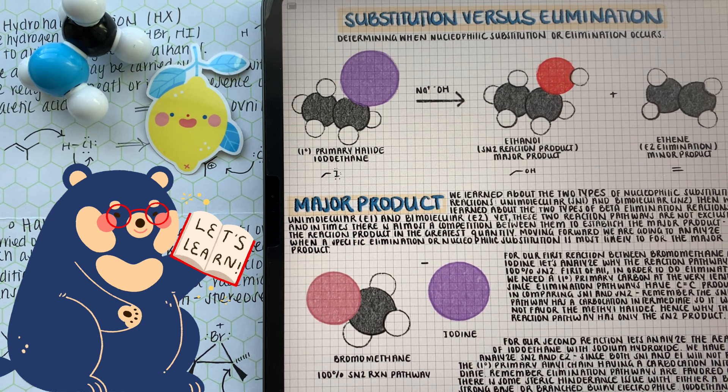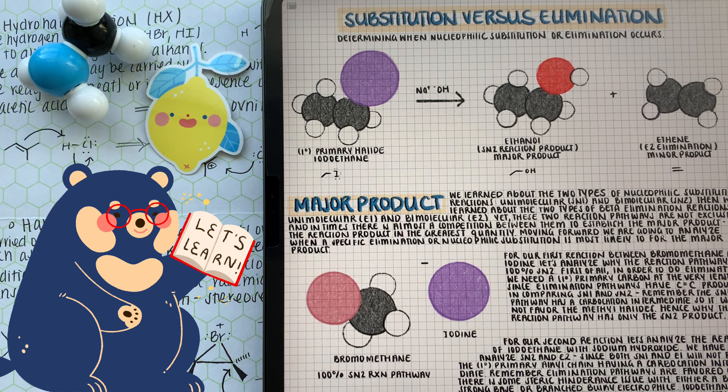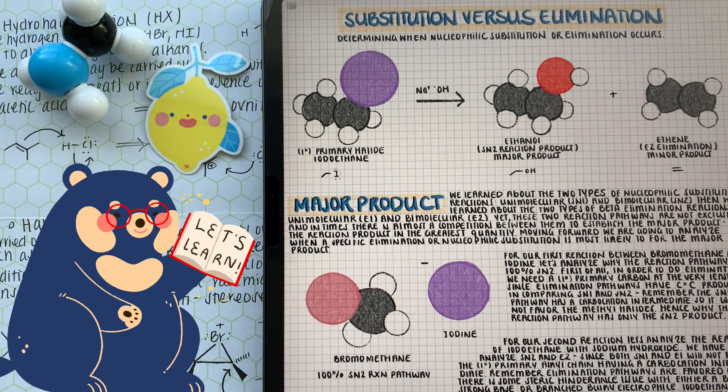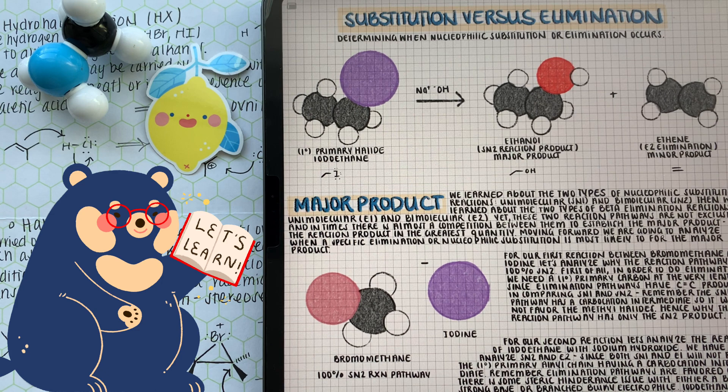For example, methyl halides is strictly SN2 because elimination results in the formation of a double bond. So we need at least two carbons. And SN1 and E1 pathways do not favor methyl carbocations because of the instability.